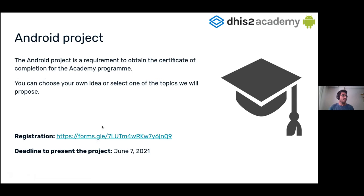This is a reminder about the Android project: completing the Android project is a requirement to obtain the certificate of the academy program. During this workshop, I would recommend submitting your idea about the application you want to build for the competition. The registration link is available and the deadline is June 7th — about a month away. You can choose your own idea based on your organization's needs, or select one of the proposed topics.